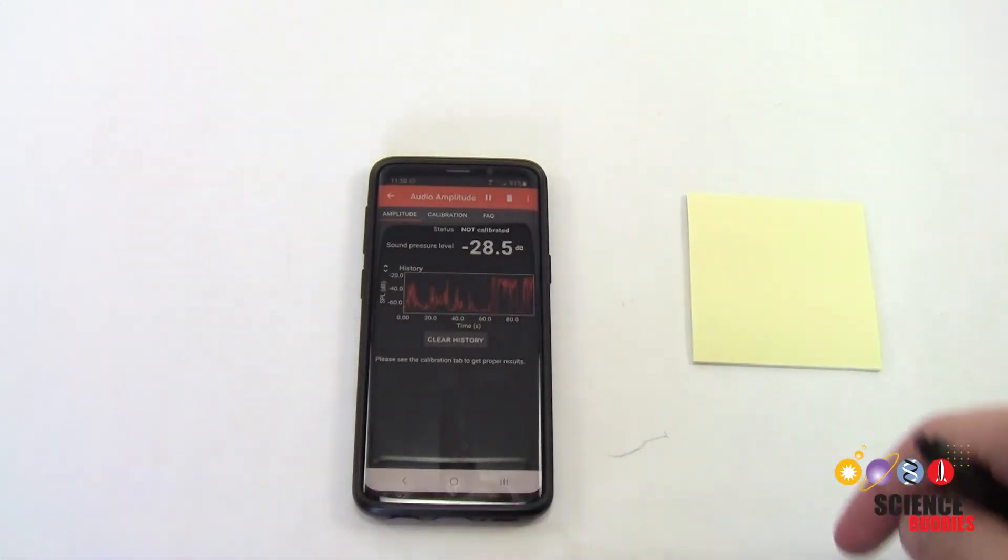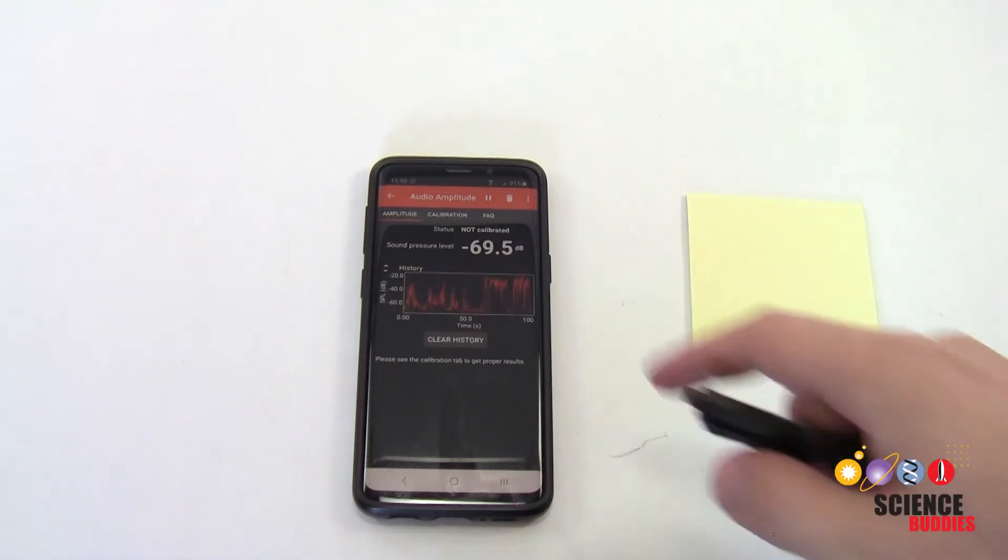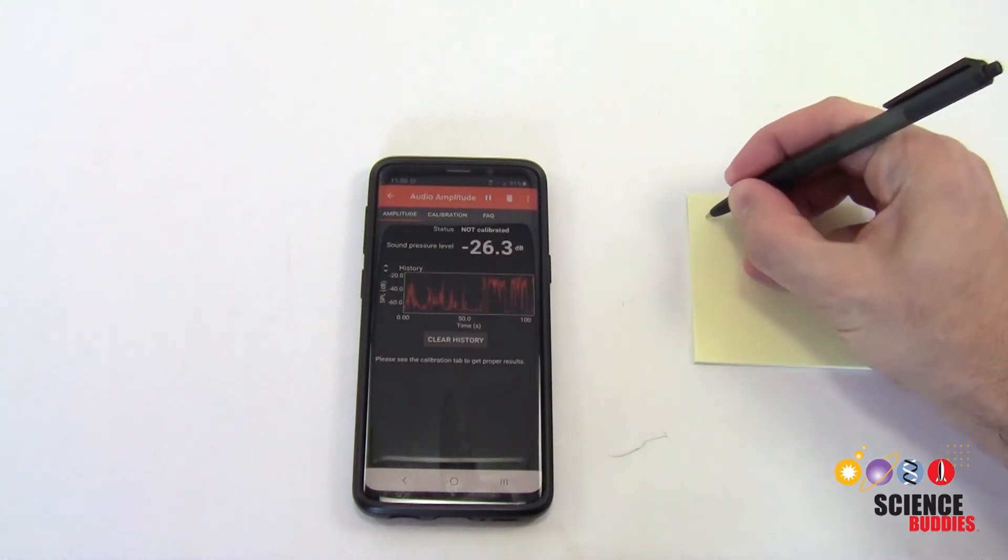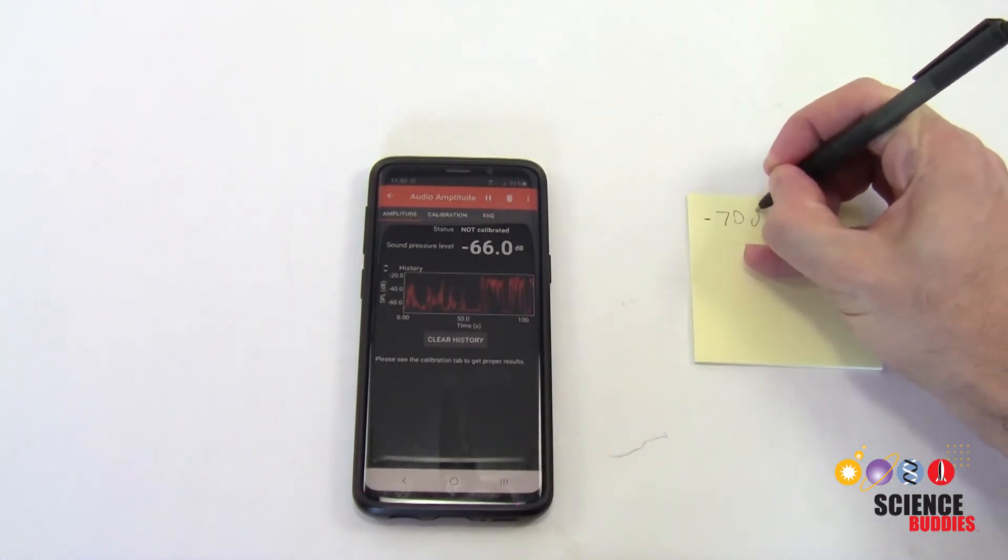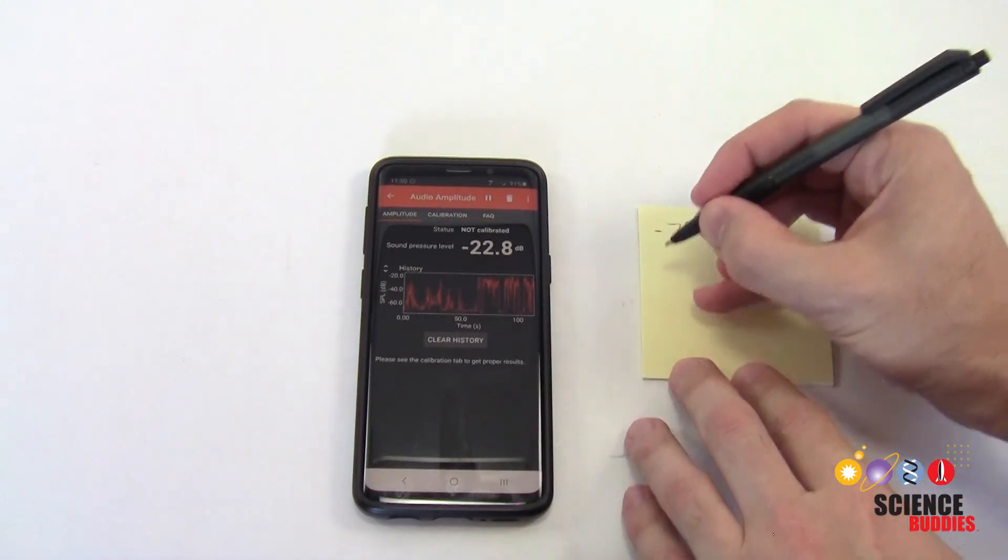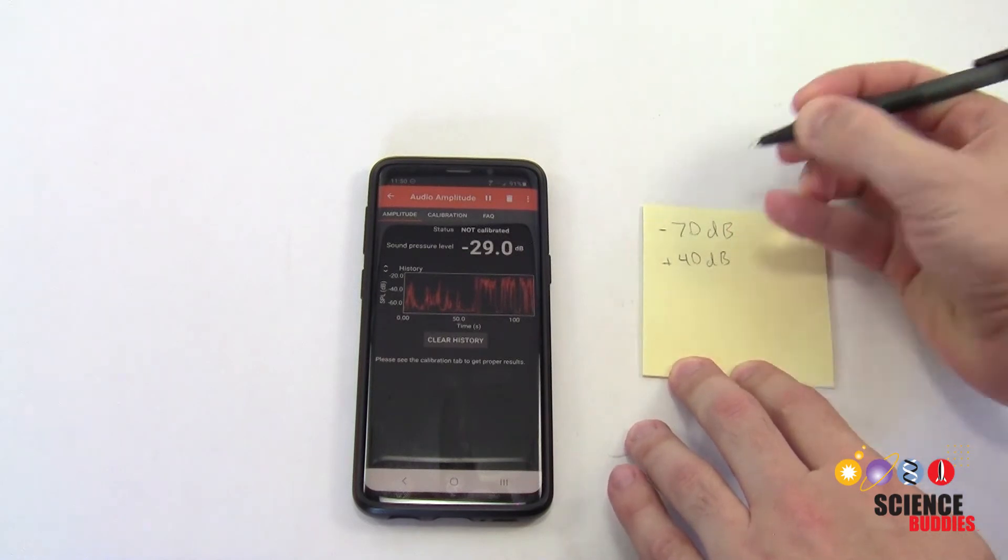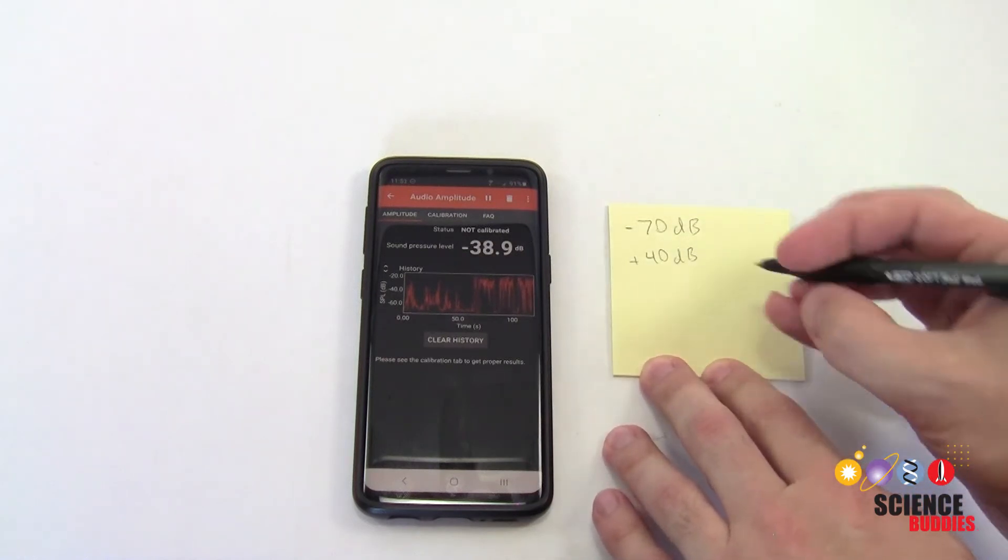I'm going to stop talking, and we're going to take a look at what the uncalibrated reading is in Firefox. In a quiet room, I was getting a reading of about negative 70 dB there. I know that that quiet room should actually be at about plus 40 dB. So, in my case, that is a difference of 110 decibels.